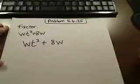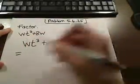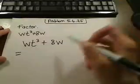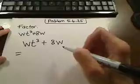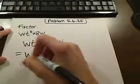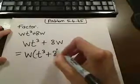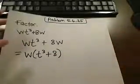Okay, so the first thing that we need to do in any of these factoring problems is factor out a greatest common factor if there is one. In this problem there is a common factor of w, so I'm going to factor that out and then I'm left with t cubed plus 8.